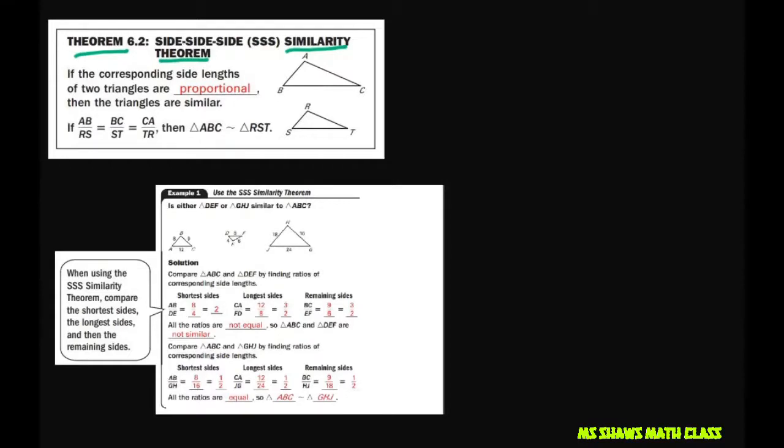So if AB to RS equals these proportions here, then the triangles would be similar. When you're comparing triangles, you want to first compare the shortest sides together, then the longer sides, then the other sides. Let's look at the first one, we want to compare ABC to DEF.